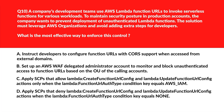This is all about Lambda. Option A says: instruct developers to configure function URLs with CORS support when accessing from external domains. Configuring CORS governs front-end request origin validation but doesn't enforce authentication on Lambda function URLs. Incorrect.